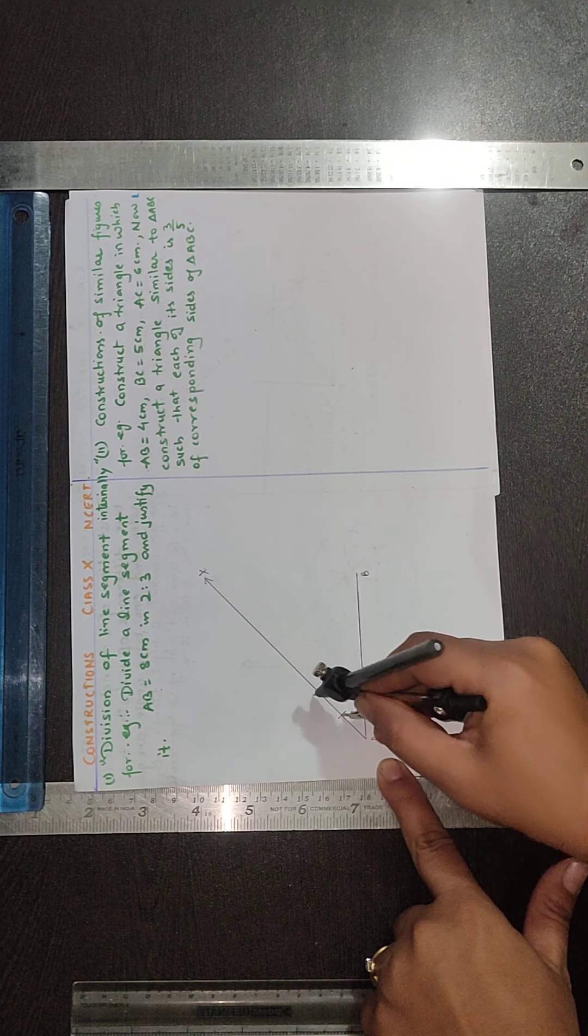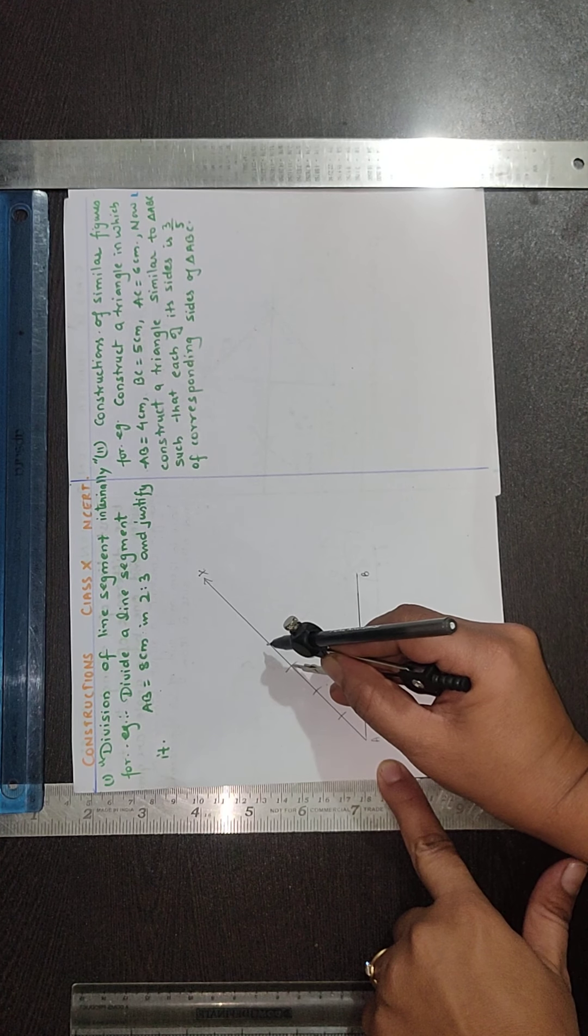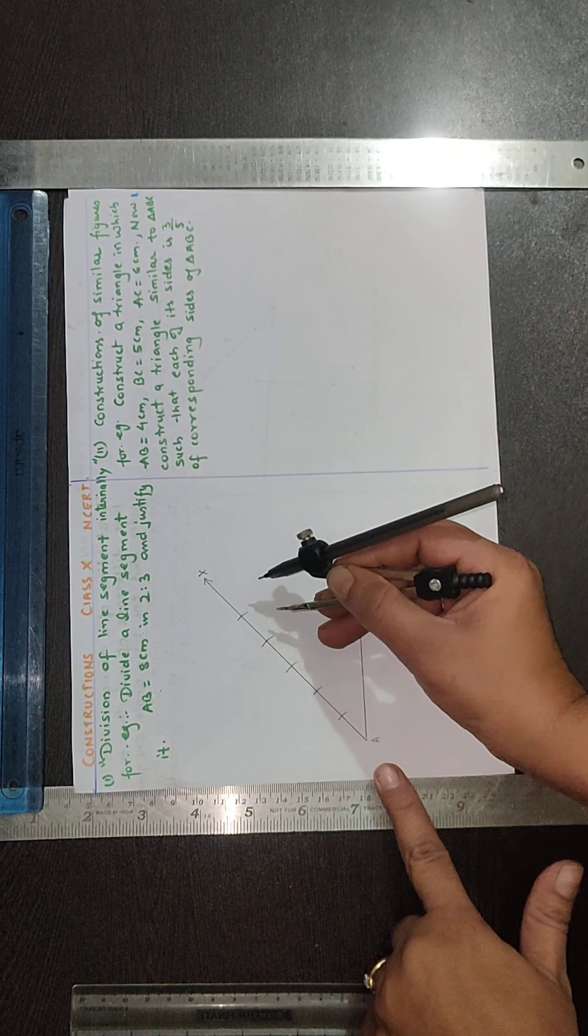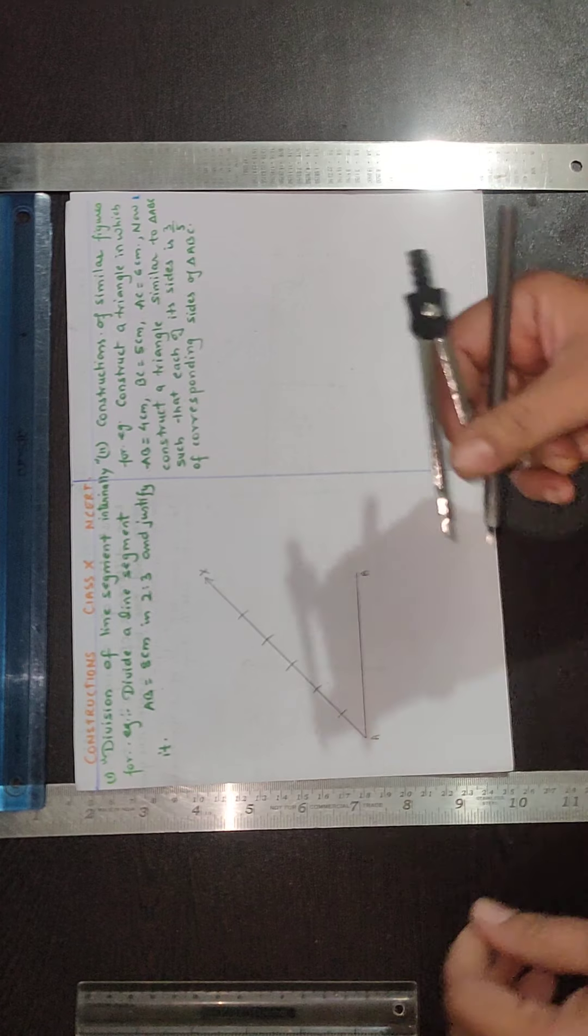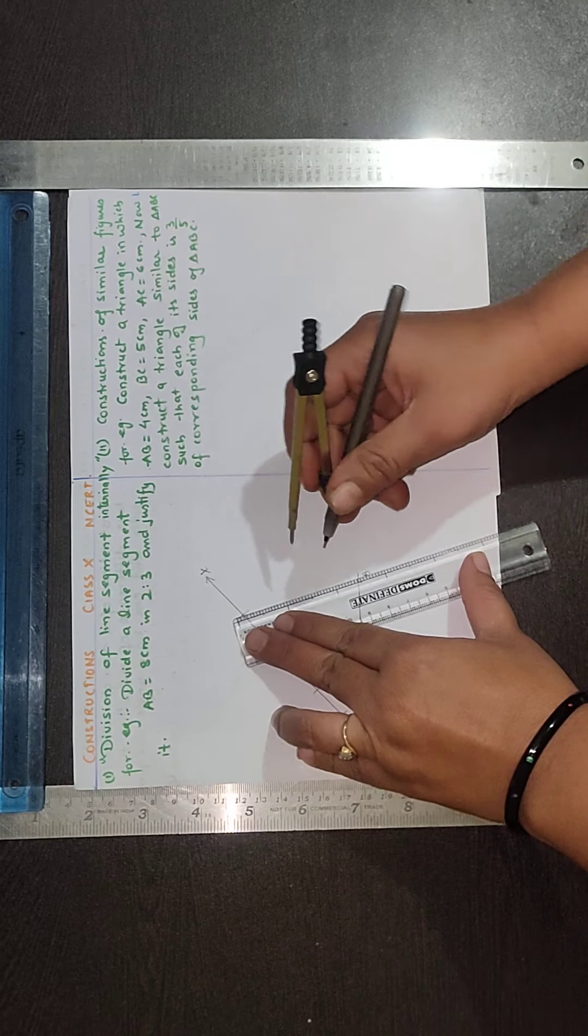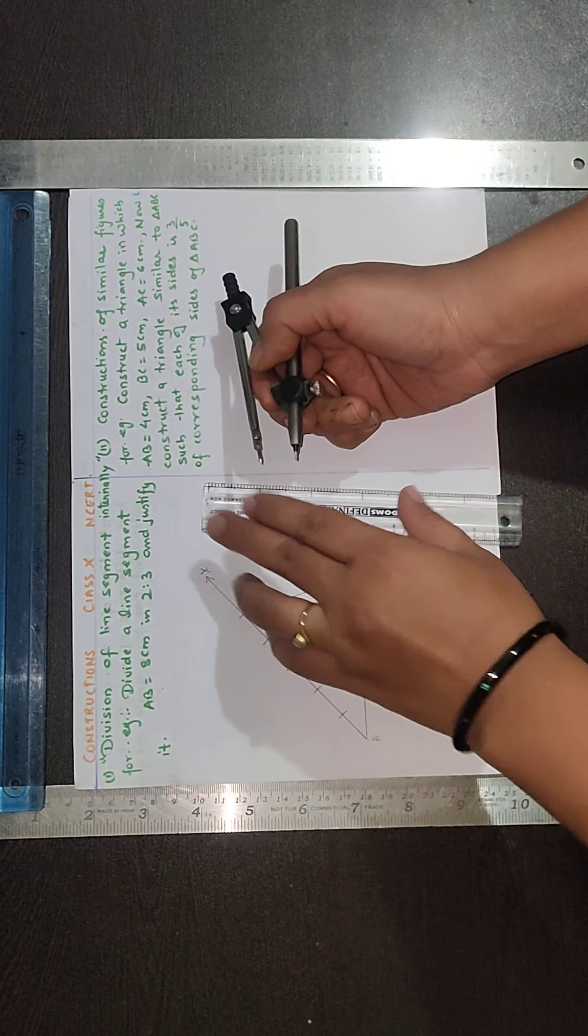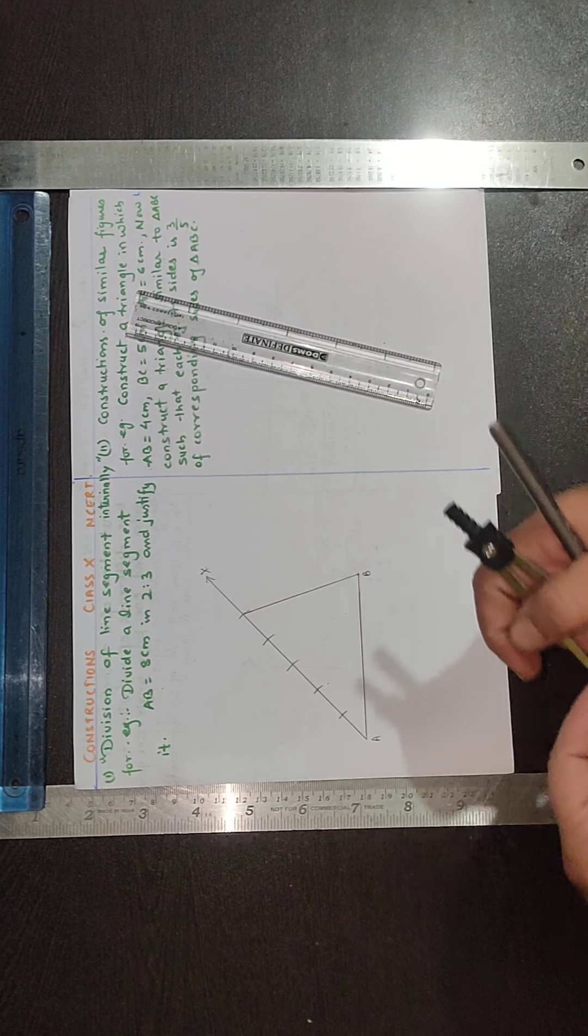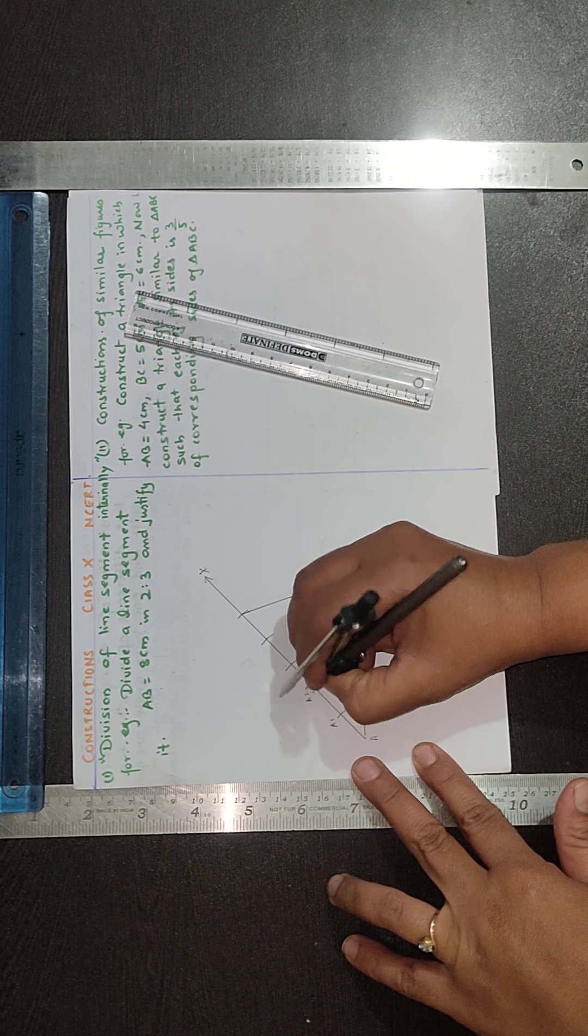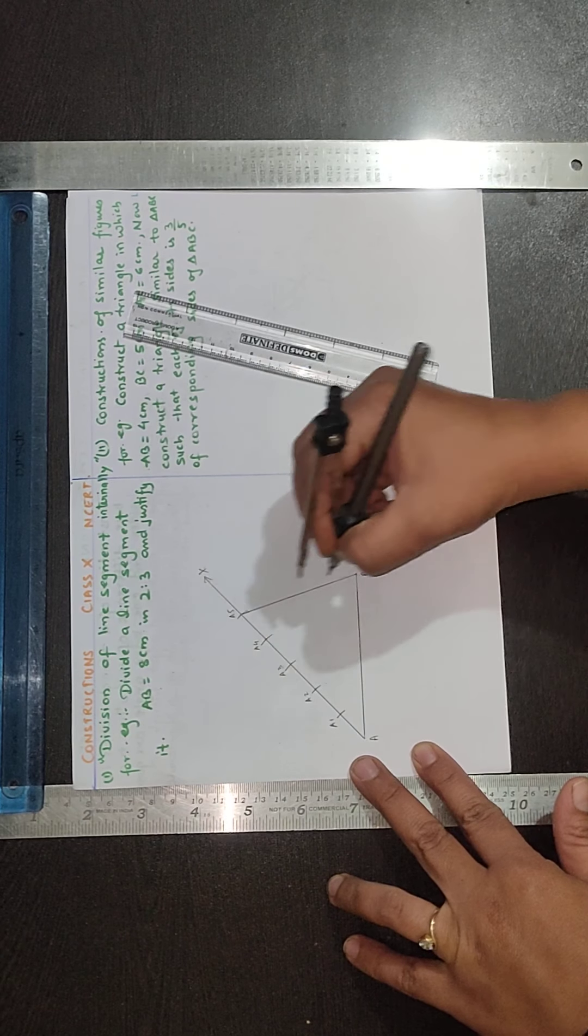A to A1, A1 to A2, A2 to A3, A3 to A4, A4 to A5 like this. Then again we need to join this A5 to B. Now we have to draw A1, A2, A3, A4 and A5. We have joined this A5 to B.